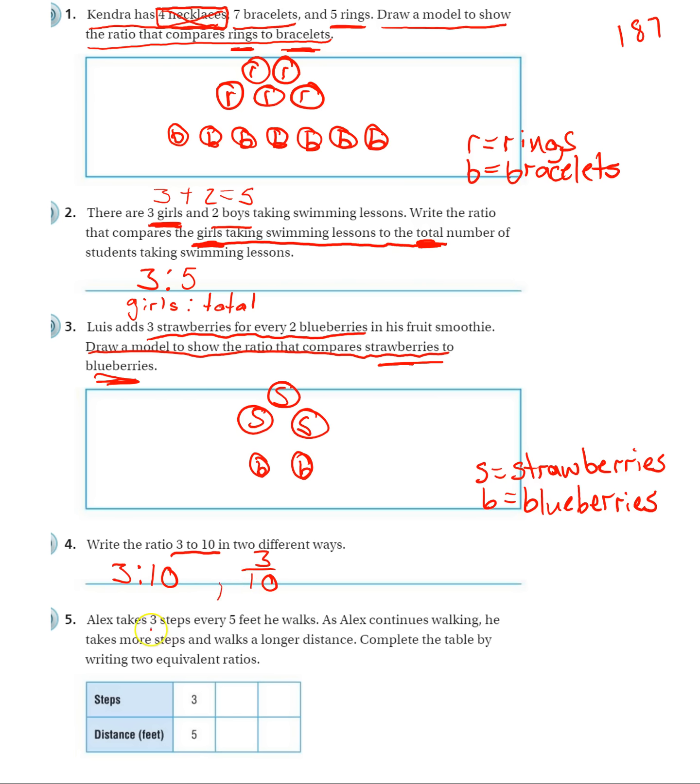Number five. Alex takes three steps for every five feet he walks. As Alex continues walking, he takes more steps and walks a longer distance. Complete the table by writing two equivalent ratios. So he takes three steps, he's gone five feet. If he takes another three steps, that's six steps. He'll have gone another five feet. So that's going to be ten feet.